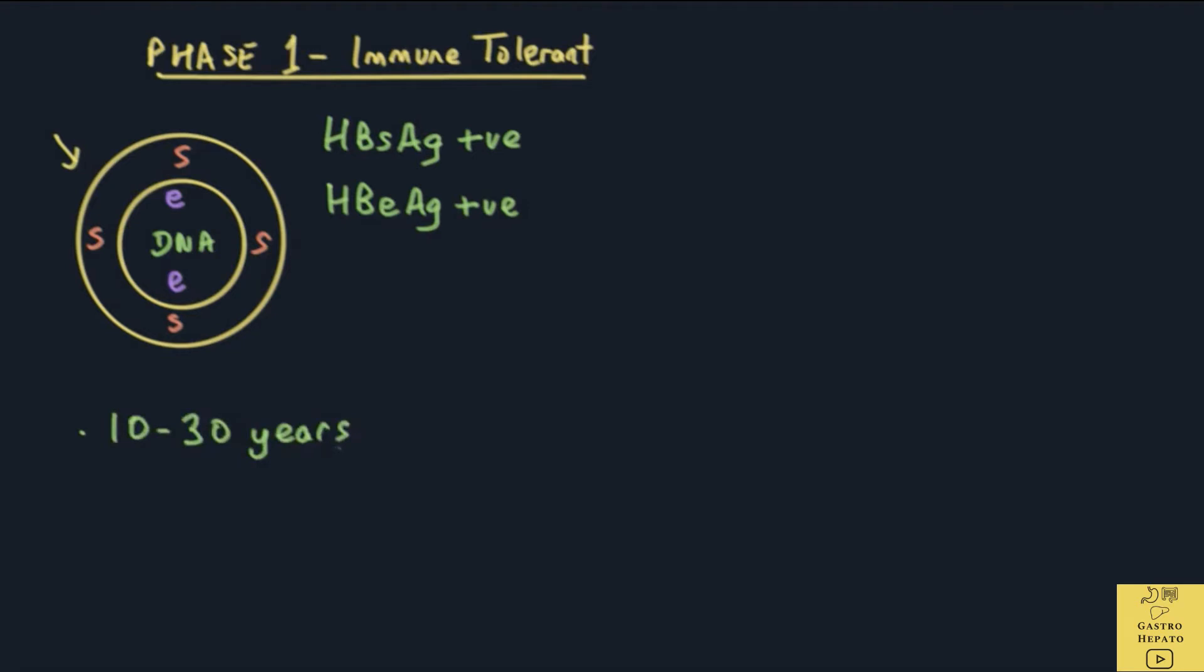Phase 1 is called the immune-tolerant phase because although the virus is in the liver, the body's immune system somehow doesn't recognize that the virus is an enemy and so does not kill the virus. We can look at it as if the virus is living in harmony within the liver.